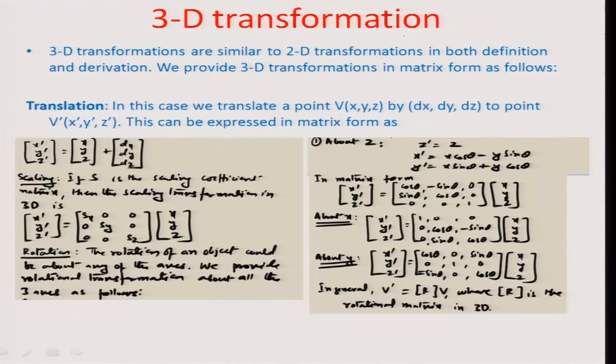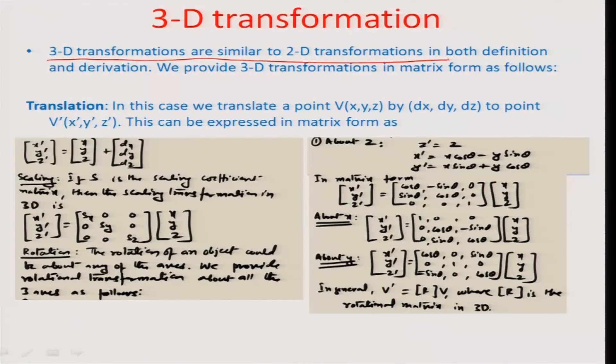From the transformation matrix, if we convert from 2D to 3D case, the only change that we need to do is in terms of one more coordinate, the z coordinate addition. The transformation matrices in 3D would work out to be: in case of translation it is x dash y dash and z dash related to x y z and the distance matrix dx dy dz. If scaling, the scaling coefficient matrix in 3D includes S z, which is the magnification factor along the z axis.